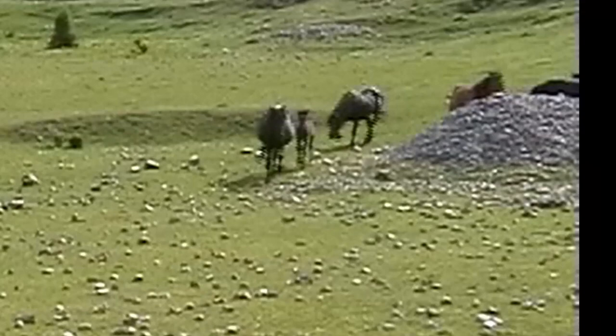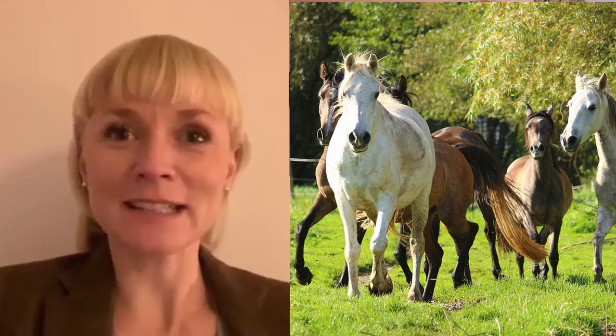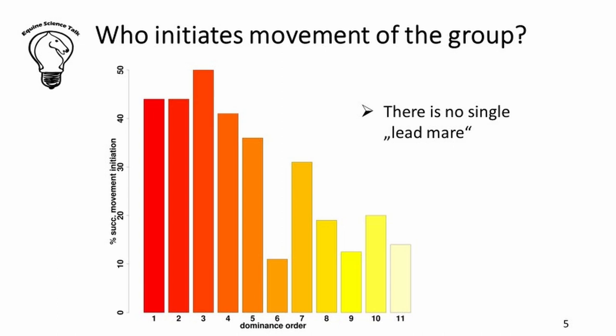We should also address the myth regarding lead mares. It's not the case that there is one mare who moves and everyone follows. In fact, any horse can leave the group and be followed, initiating movement. However, higher-ranking mares are followed more often than lower-ranking horses, as you can see from the chart. This is called distributed leadership. Now let's look at the different types of hierarchy.